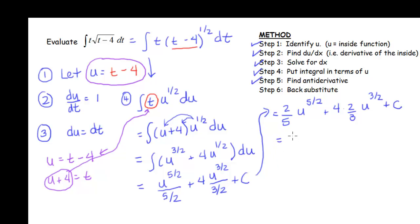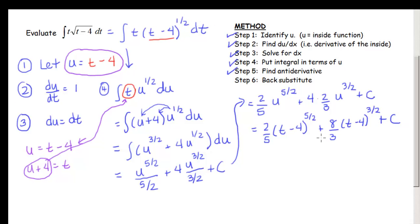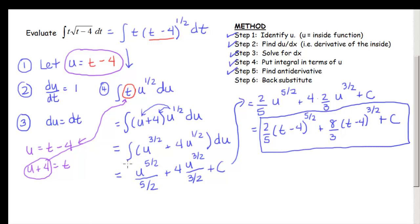I've found my antiderivative. Remember, if you're dividing by a fraction, that's the same as multiplying by its reciprocal. So this simplifies to 2/5 u to the 5/2 plus 8/3 u to the 3/2 plus c. Let's back substitute now. So I'm going to have 2/5 times (t minus 4) to the 5/2 plus 8/3 times (t minus 4) to the 3/2 plus c. The key here is if the original variable doesn't all cancel out, look back at your original u and see if there's a way to solve for it so you can put it in terms of u.